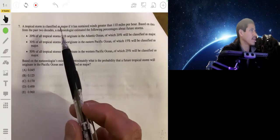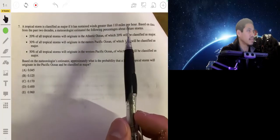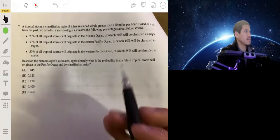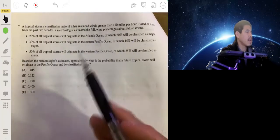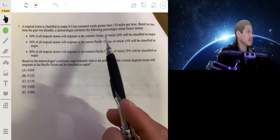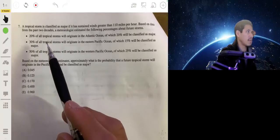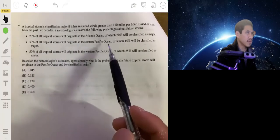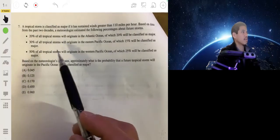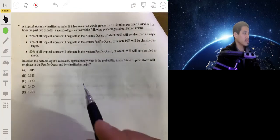All right, a tropical storm is classified as major if it has sustained winds greater than 110 miles per hour. Based on data from the past two decades, a meteorologist estimated the following percentages about future storms: 20% of all tropical storms will originate in the Atlantic Ocean, of which 20% will be major. 30% will originate in the eastern Pacific Ocean, of which 15% will be classified as major. And 50% will originate in the western Pacific Ocean, of which 25% will be classified as major.